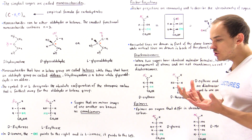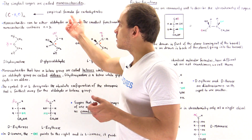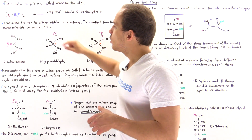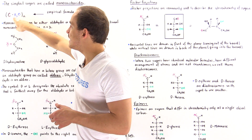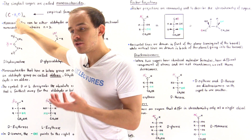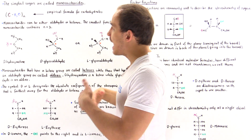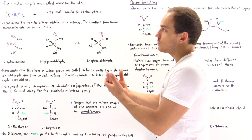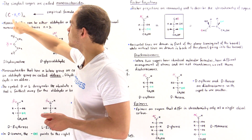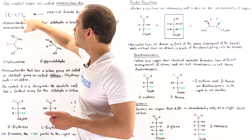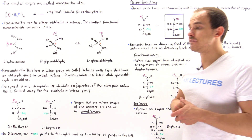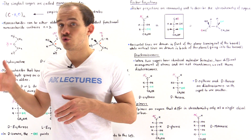Why do we call sugars carbohydrates? If we look at the empirical formula for carbohydrates, we see that we have carbon, H, and oxygen — essentially carbon and water. Another name for water is hydrate, so we have carbohydrates: molecules containing carbon as well as water. The empirical formula is CH₂O multiplied by N, where N is any positive integer equal to 3 or greater.